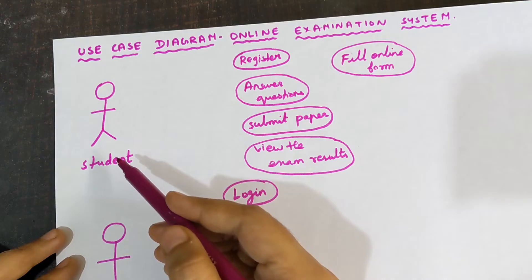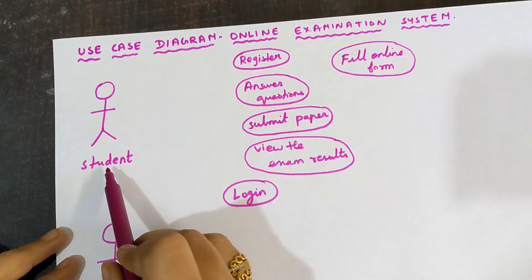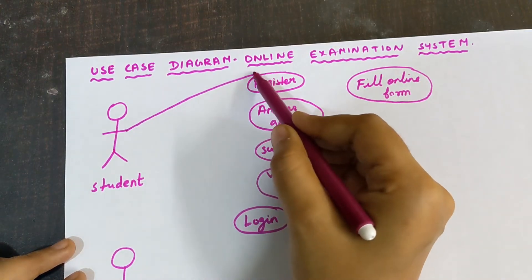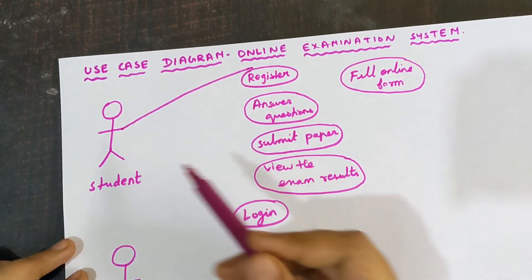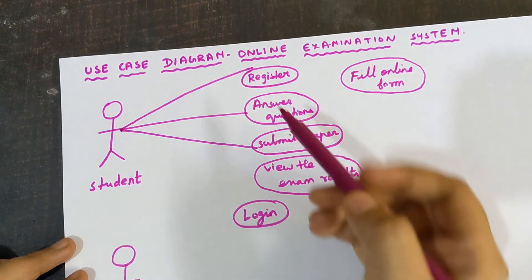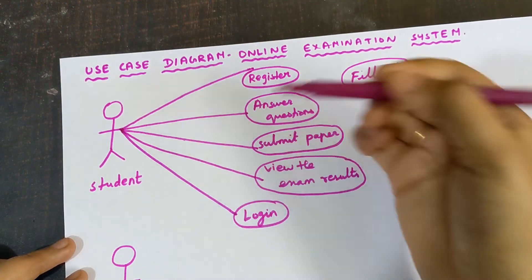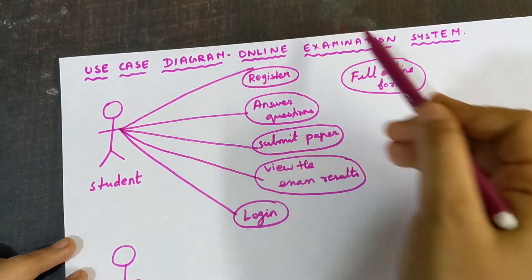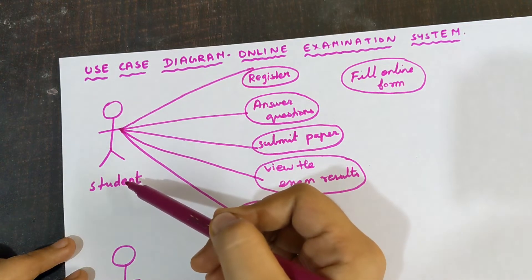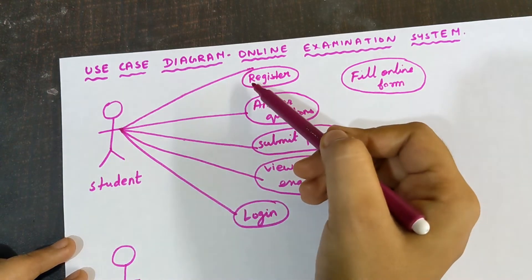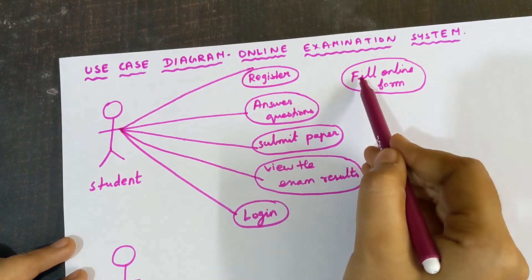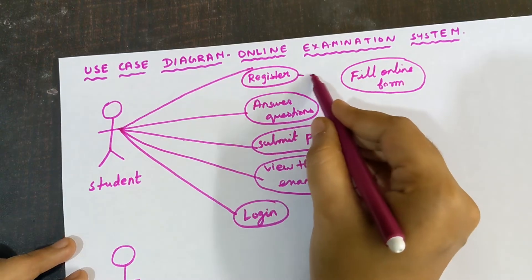Now I need to connect the actor with the use cases using a connector — a line from the actor to each use case. I connect the student to Submit Answer Paper, View Exam Results, Login, and Register. Fill Online Form is part of the registration process, so I do not connect it directly to the student actor. Instead, I connect the Register use case to Fill Online Form by drawing a dotted arrow line.